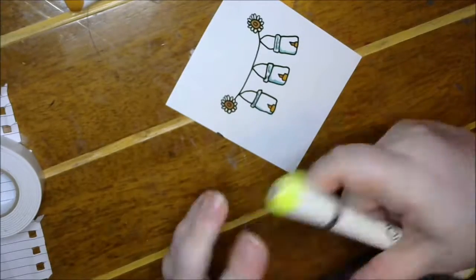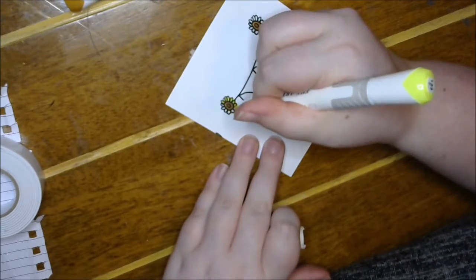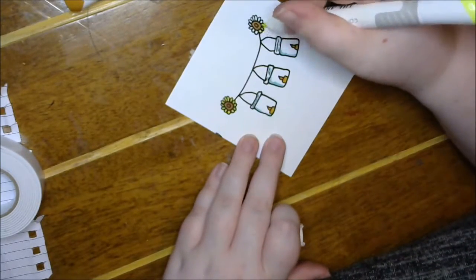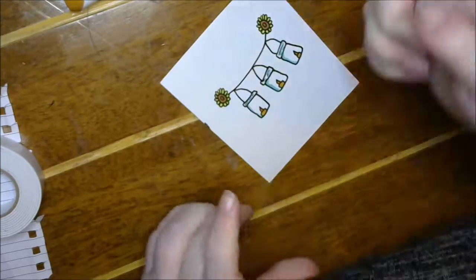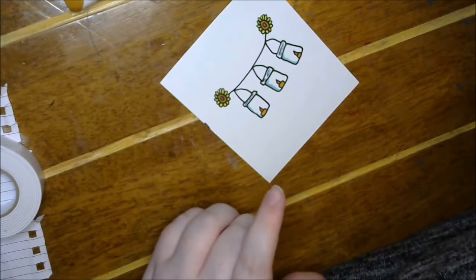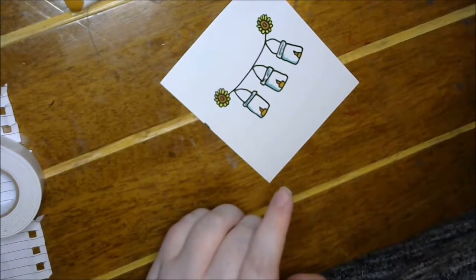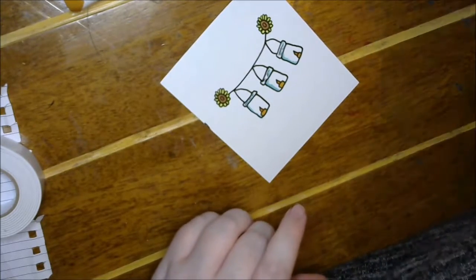So basically I just used browns, yellows, oranges for the sunflowers and the candle. I used a light blue for the mason jar just to give it a look that the glass is reflecting or the sun is reflecting off the glass.